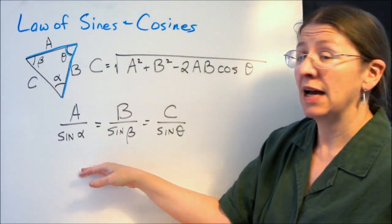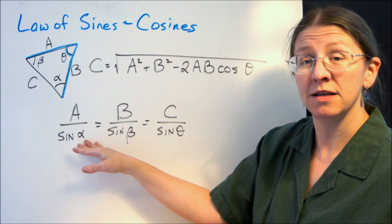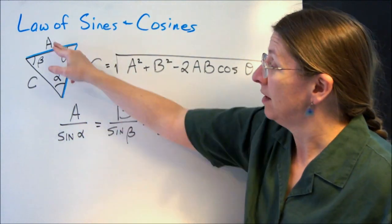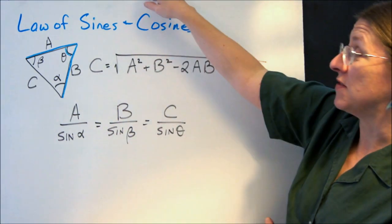That's the Law of Cosines. The Law of Sines says that the sides divided by the opposite sines, a over sine alpha, are all the same. These are the laws of sines and cosines.